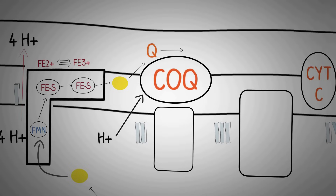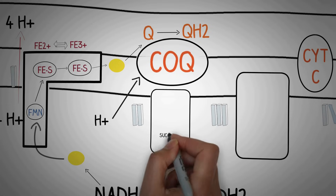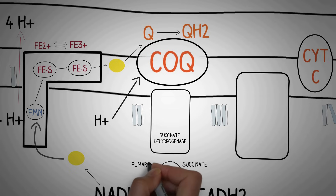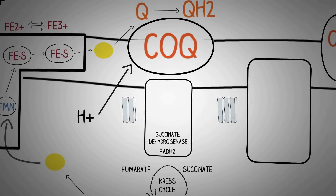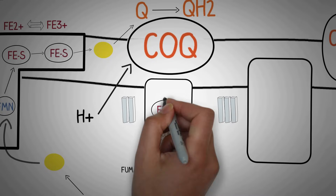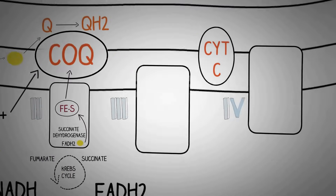Coenzyme Q then combines with two hydrogen ions from the matrix and gets converted to the reduced form of ubiquinol. Now coming to the second complex, which is the succinate dehydrogenase complex — this complex contains the enzyme succinate dehydrogenase, which catalyzes the conversion of succinate to fumarate in the Krebs cycle. This oxidation reaction causes the generation of FADH2. The FADH2 stays inside the second complex and donates its electrons to the iron-sulfur complexes of complex II.